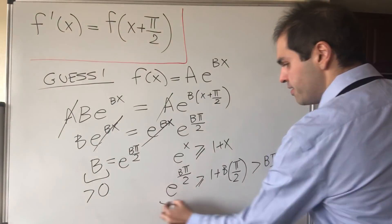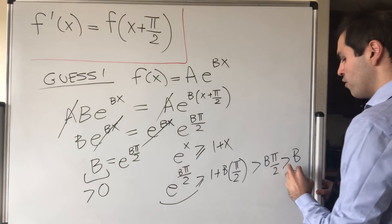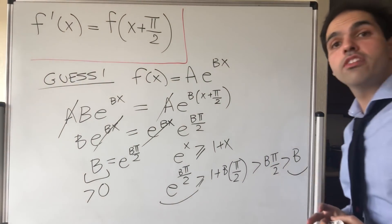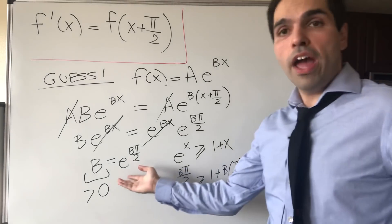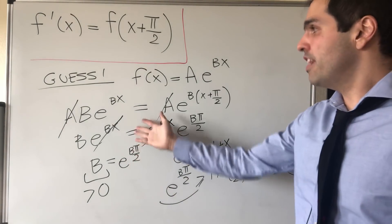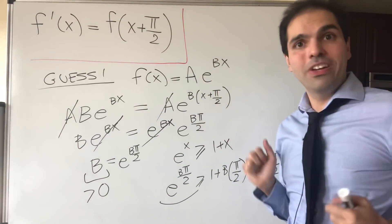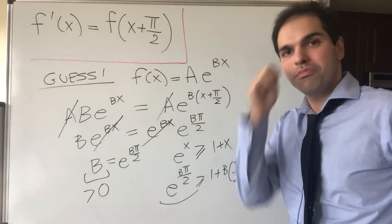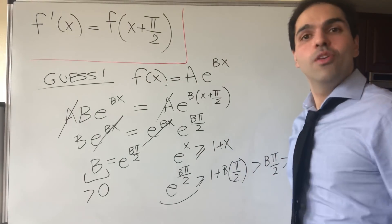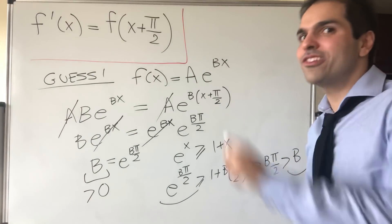So this number, e^(Bπ/2), is strictly bigger than B, so there's no way they could be equal. And therefore, what we have is that in this case there's no exponential solution, which is very sad, but we're strong ODE warriors and will not give up.